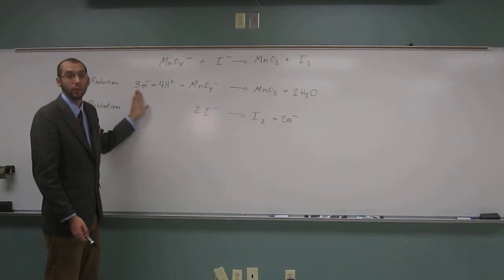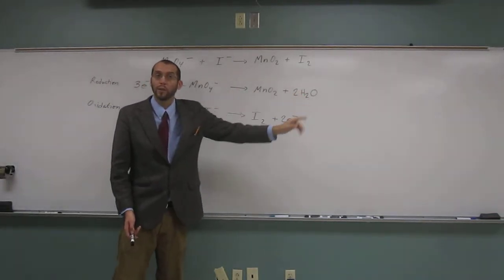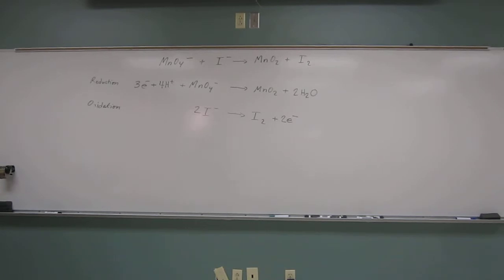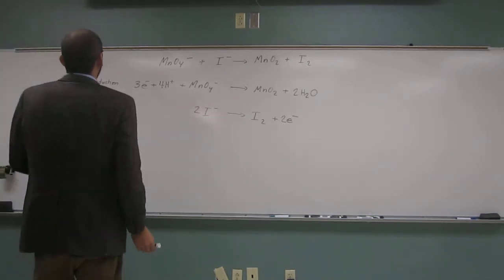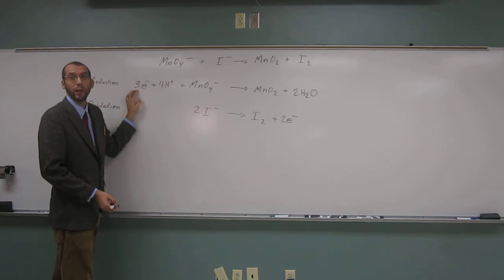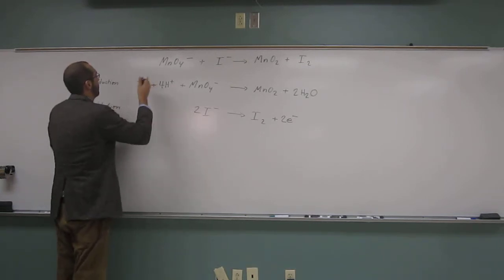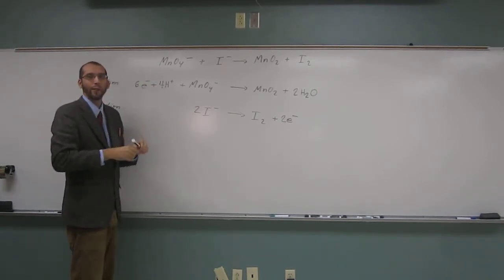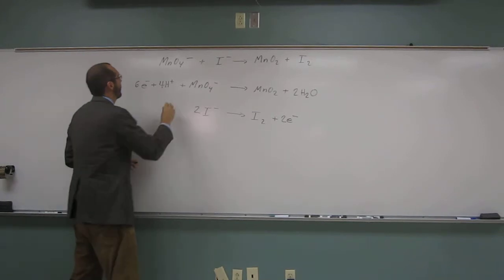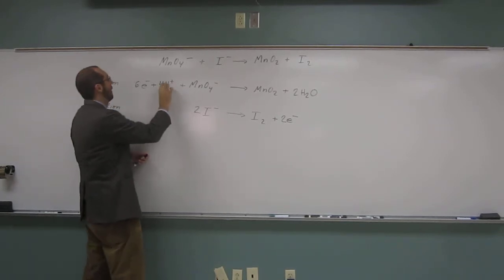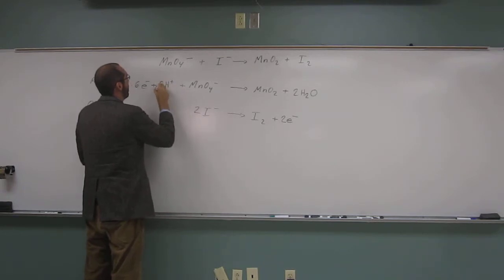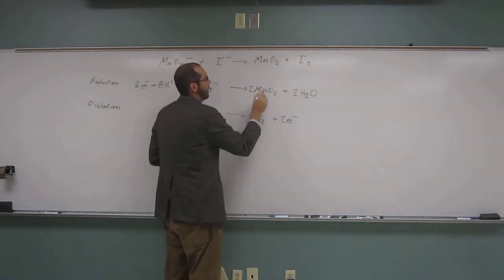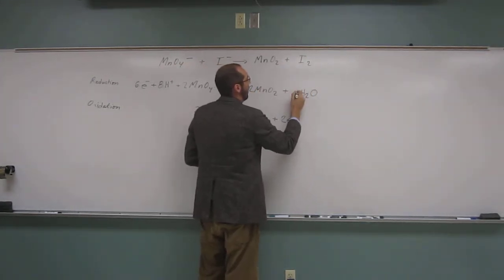So what would we have to do to this one? Multiply by two. And this one? By three. Remember when we do that, we're not just multiplying this one, we've got to multiply everything because the coefficients are relative to each other. So multiply two times three, what do we get? Six. Two times four? Eight. Two times one? Two. Two times one? Two. And two times two? Four.